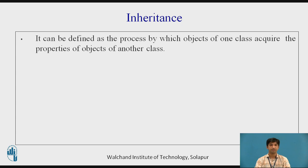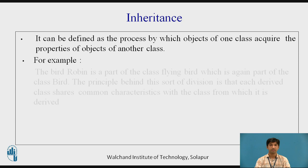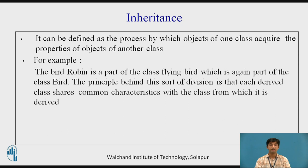Inheritance can be defined as the process by which objects of one class acquire the properties of objects of another class. It supports the concept of hierarchical classification. For example, the bird robin is a part of the class flying bird, which is again a part of the class bird. Each derived class shares common characteristics with the class from which it is derived.